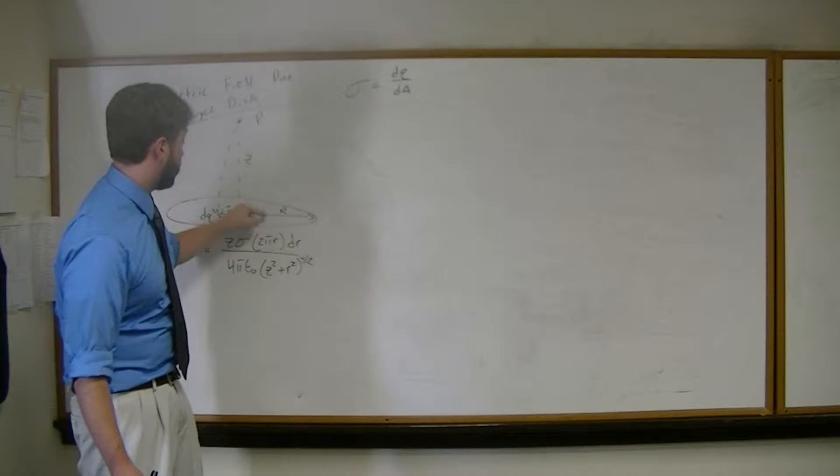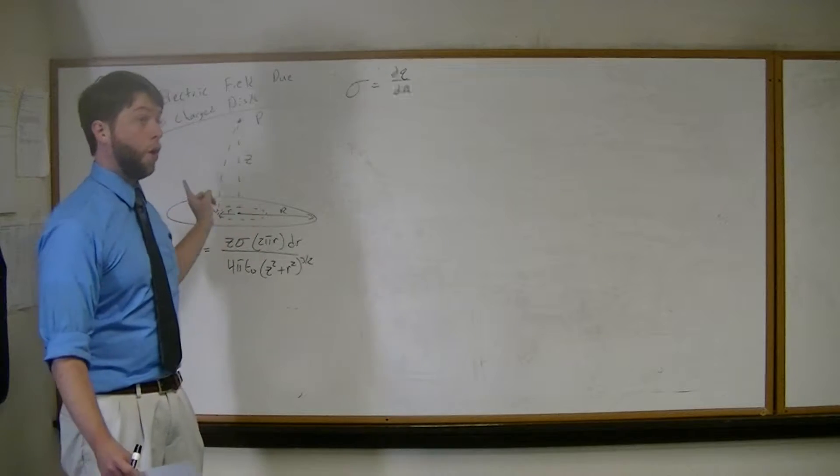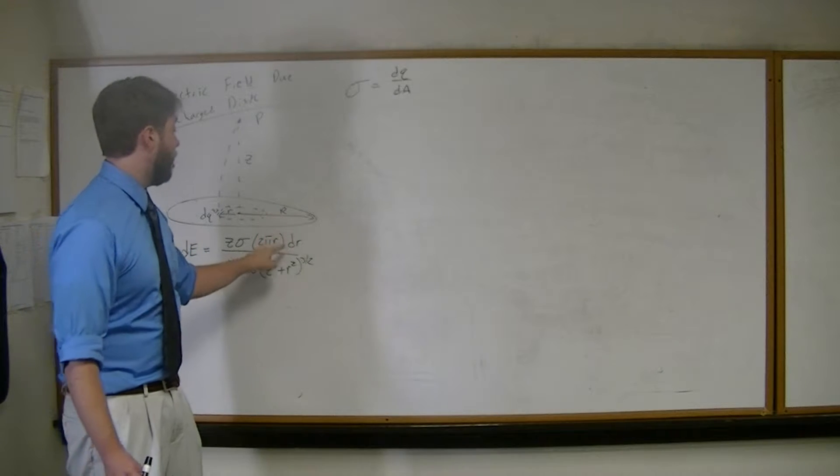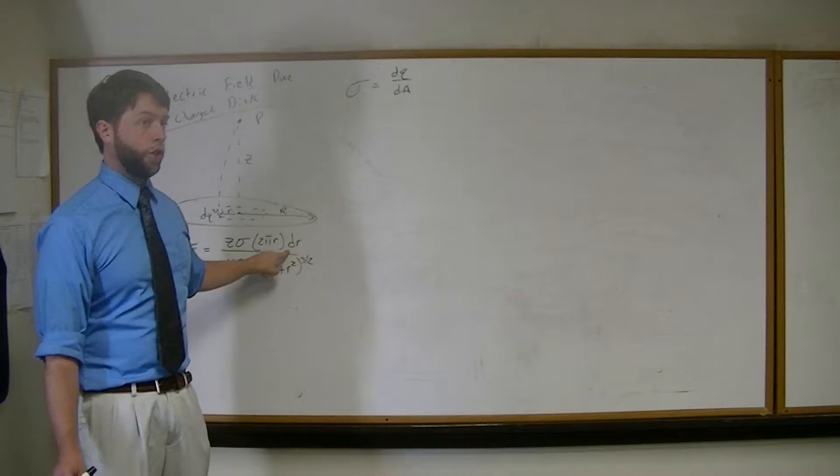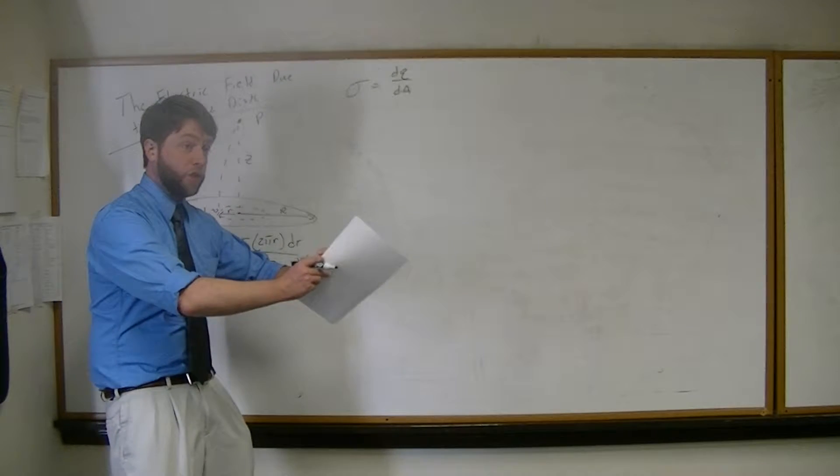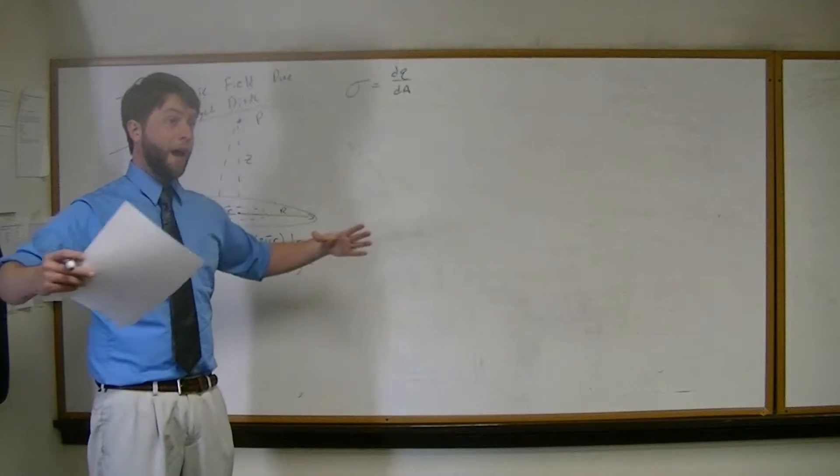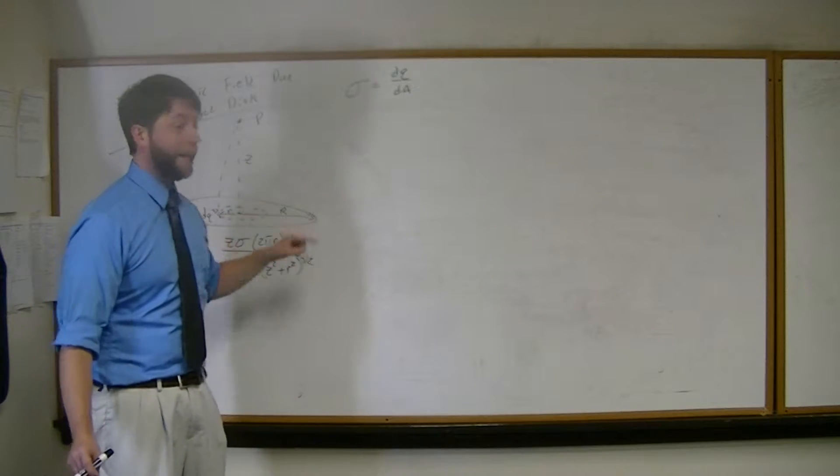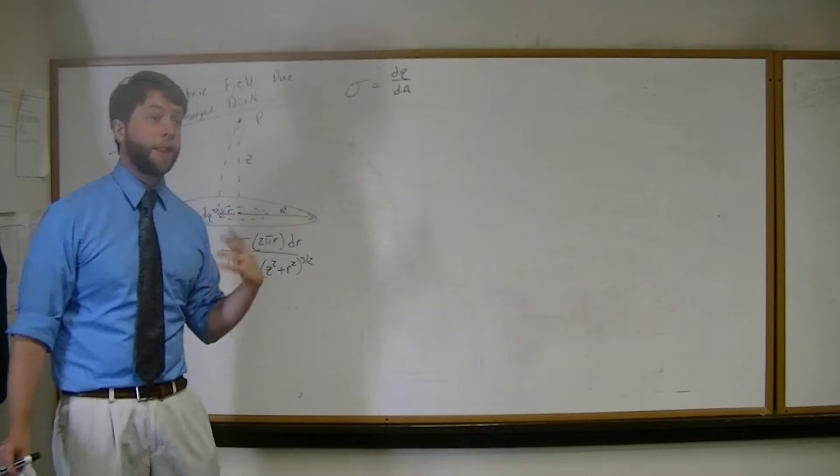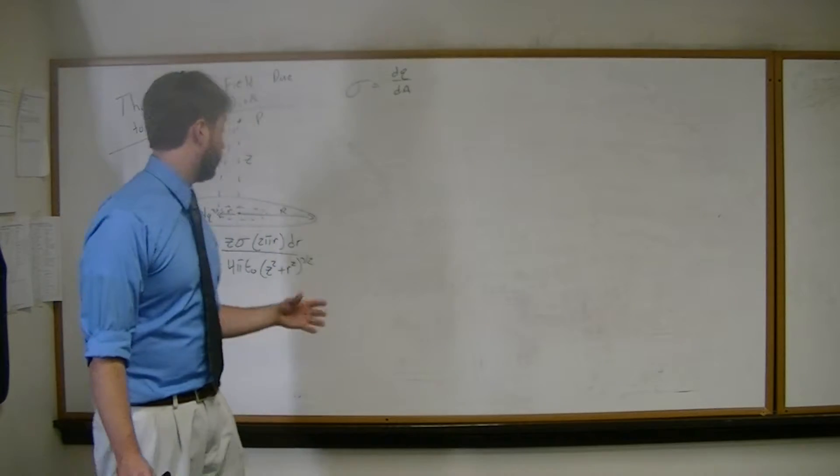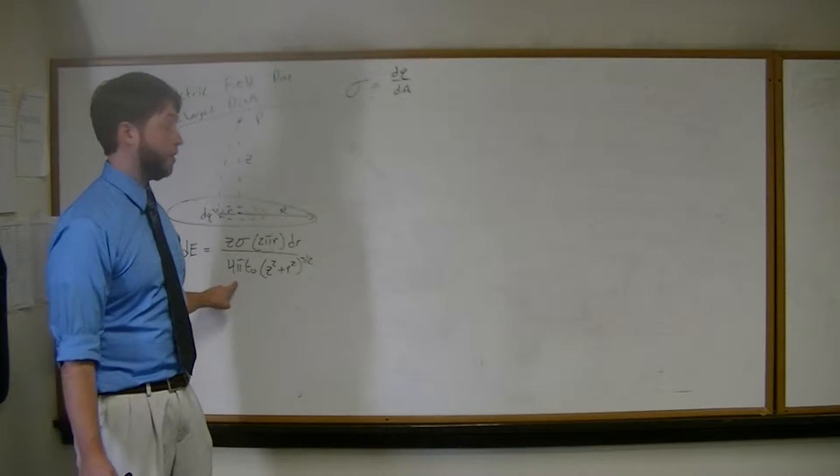2πr represents the circumference of a small disk that we've already integrated around. But now we have this dr term because now we need that small disk to expand outward to cover the full radius of our big disk. Again, think about calculus integration here a little bit. Our denominator, however, has not changed.